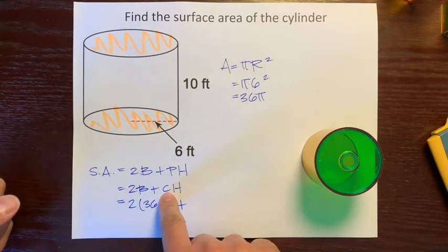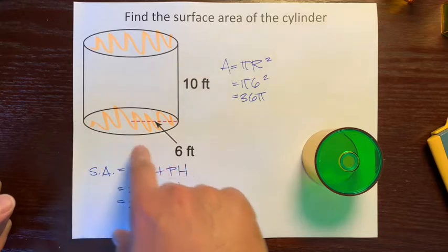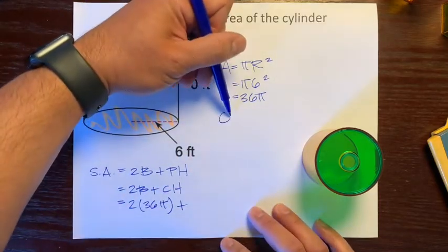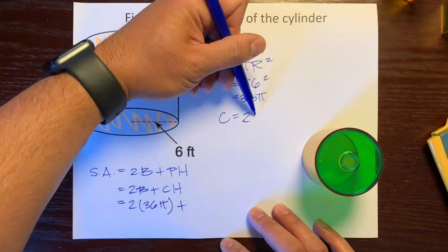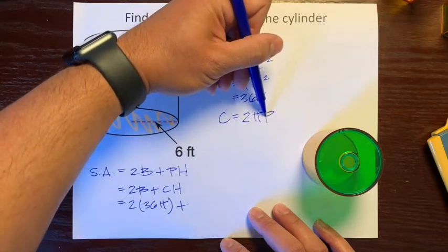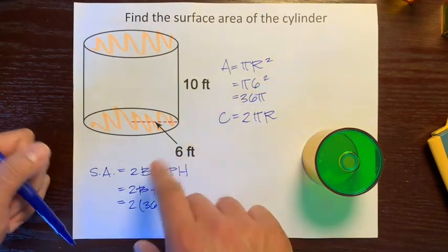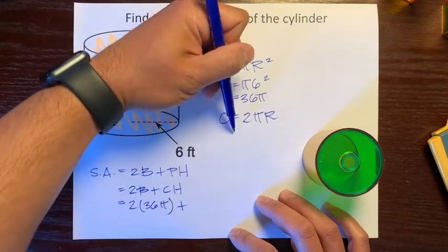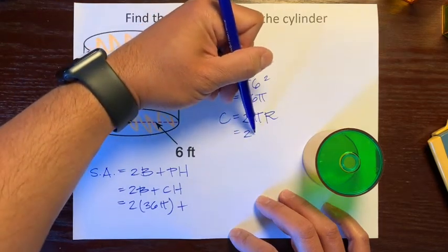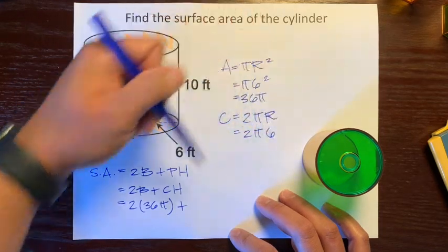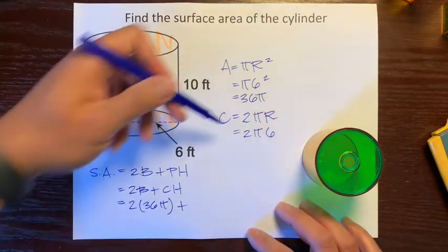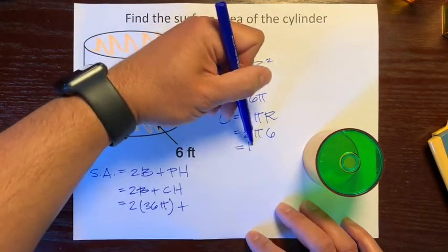Now, let's find the circumference of this circle. The formula for circumference is 2 pi times the radius. The radius is 6, so we'll just plug that in. 2 times pi times 6, 2 times 6 is 12, 12 pi.